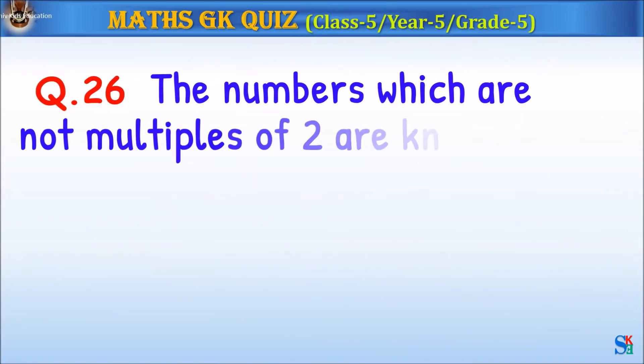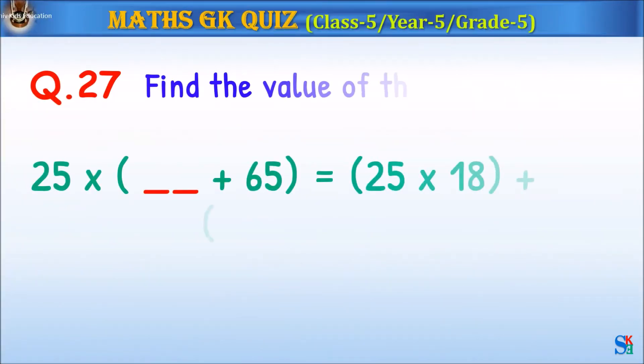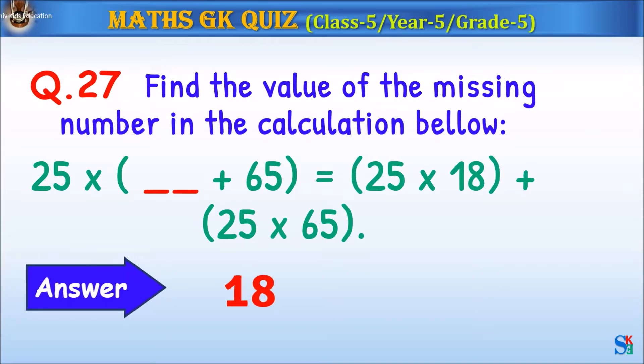Question 26: The numbers which are not multiples of two are known as what? The answer is odd. Question 27: Find the value of the missing number in the calculation below. The answer is 18.